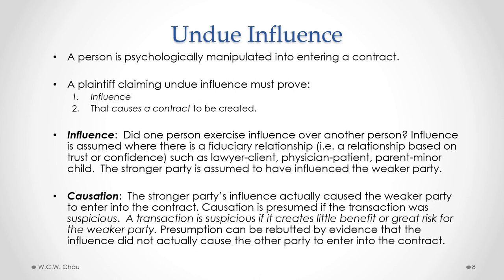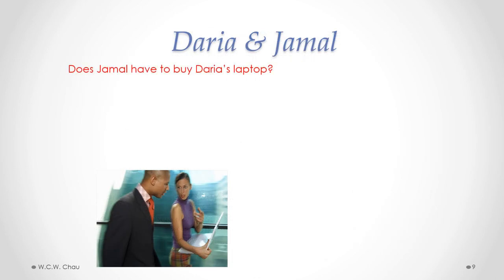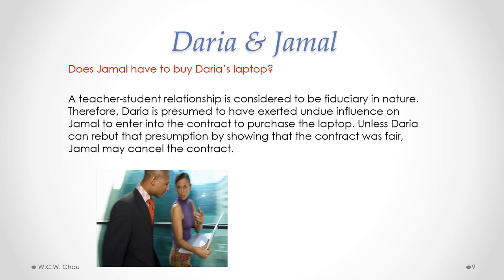The second requirement is causation. The stronger party's influence needs to have actually caused the weaker party to enter into the contract. Causation is presumed if the transaction was considered to be suspicious. A transaction is suspicious if it creates little benefit or great risk for the weaker party. That presumption can be rebutted by evidence that the influence did not actually cause the other party to enter into the contract. A teacher-student relationship is recognized to be fiduciary in nature. Therefore, Daria is presumed to have exerted undue influence on Jamal to enter into the contract to purchase the laptop. Unless Daria can rebut that presumption by showing the contract was fair, Jamal may cancel the contract.